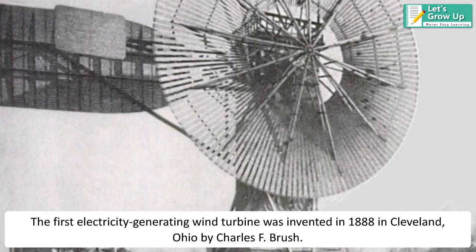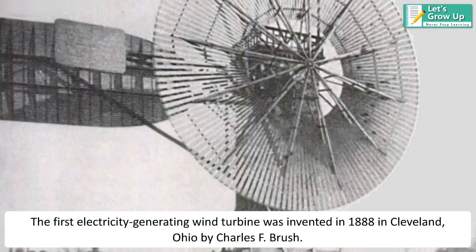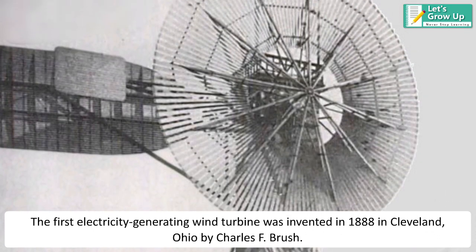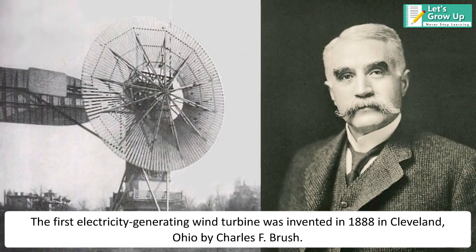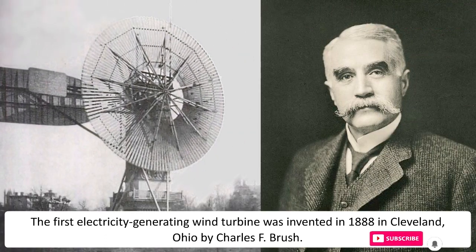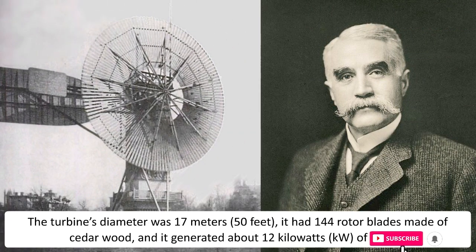The first electricity-generating wind turbine was invented in 1888 in Cleveland, Ohio by Charles F. Brush. The turbine's diameter was 17 meters, it had 144 rotor blades made of cedar wood, and it generated about 12 kilowatts of power.